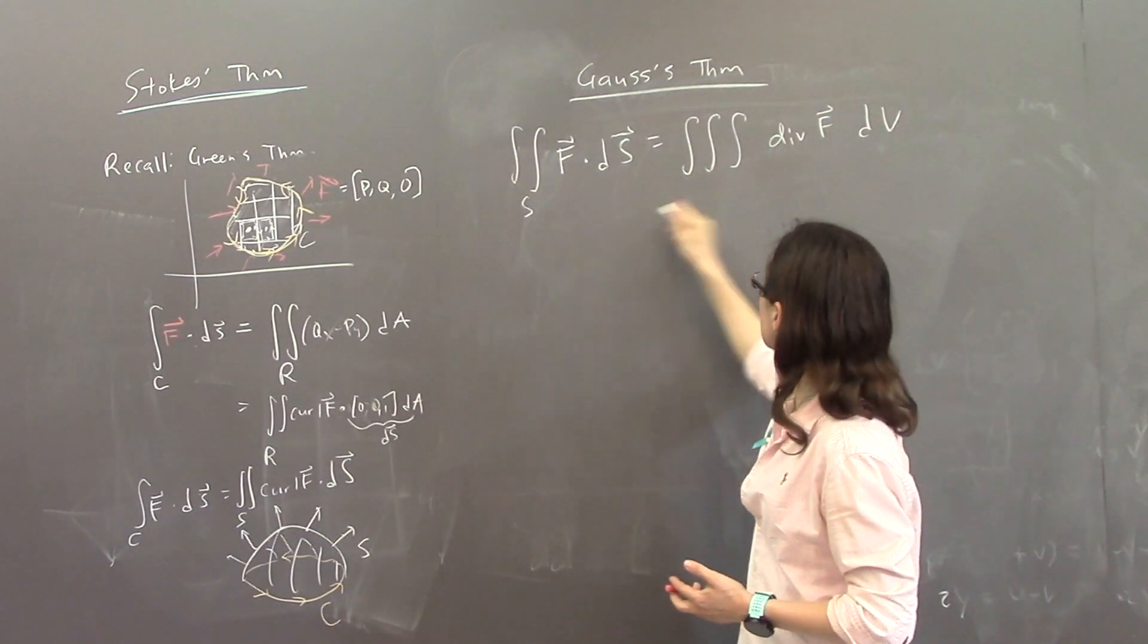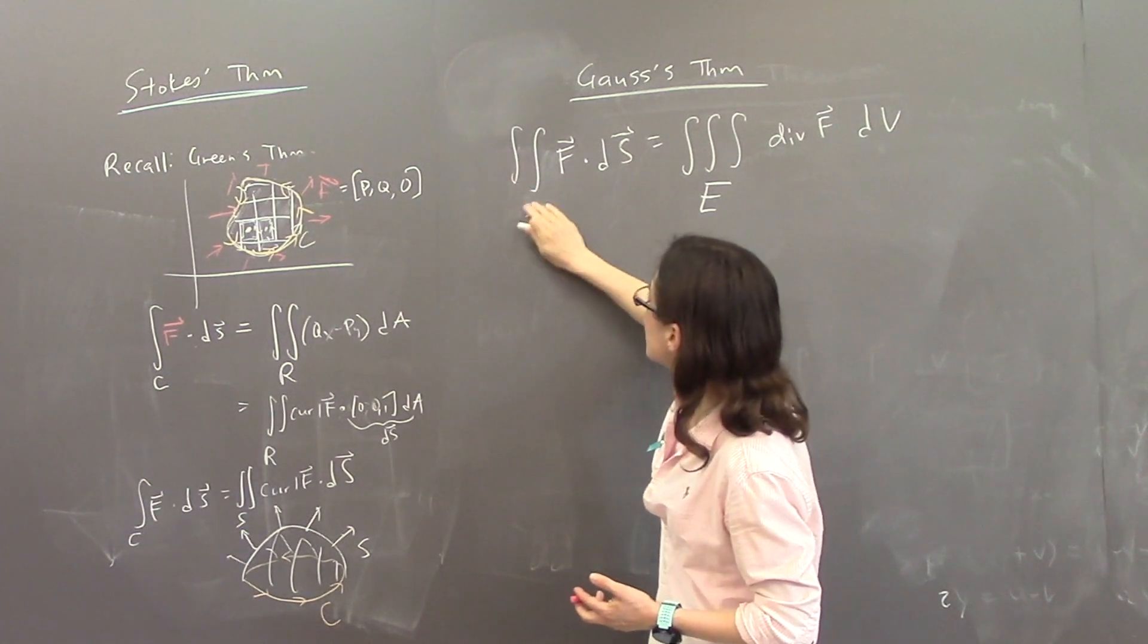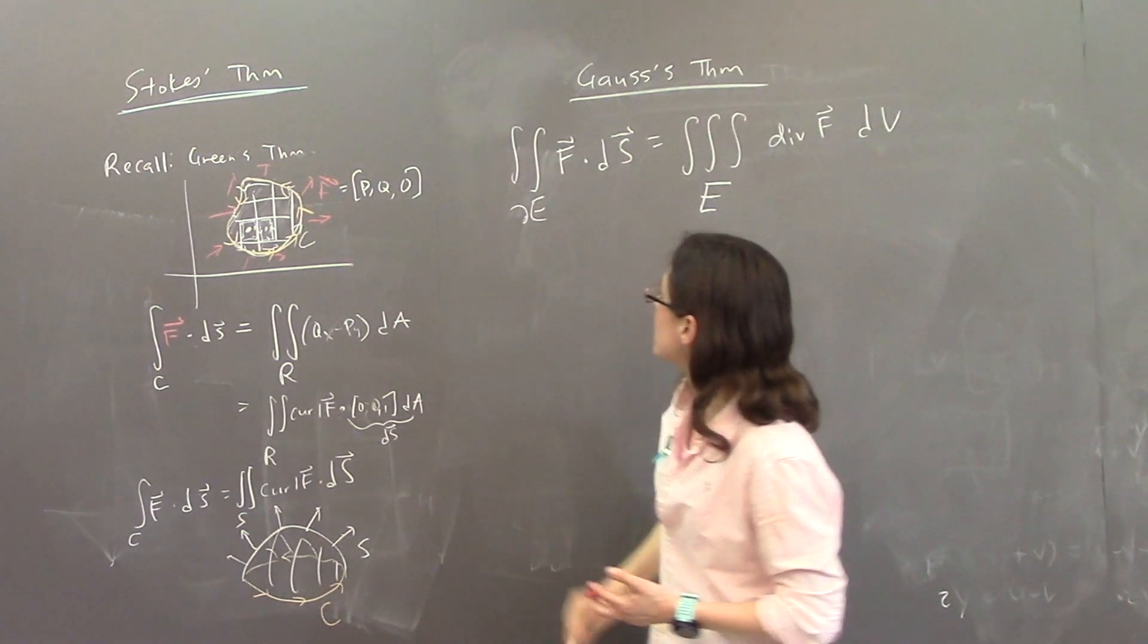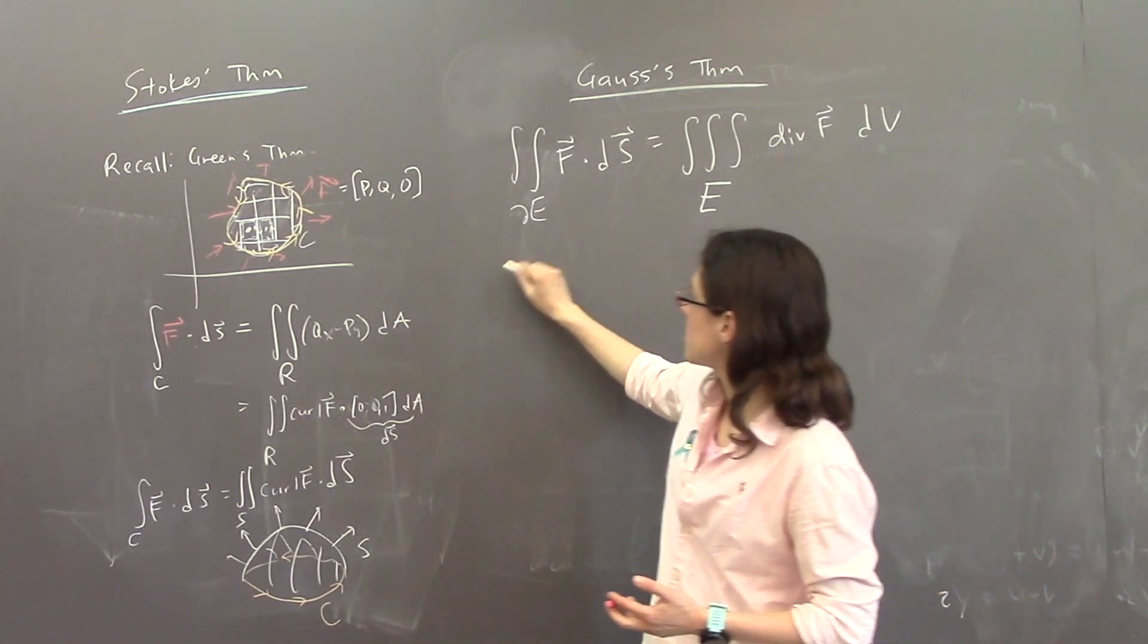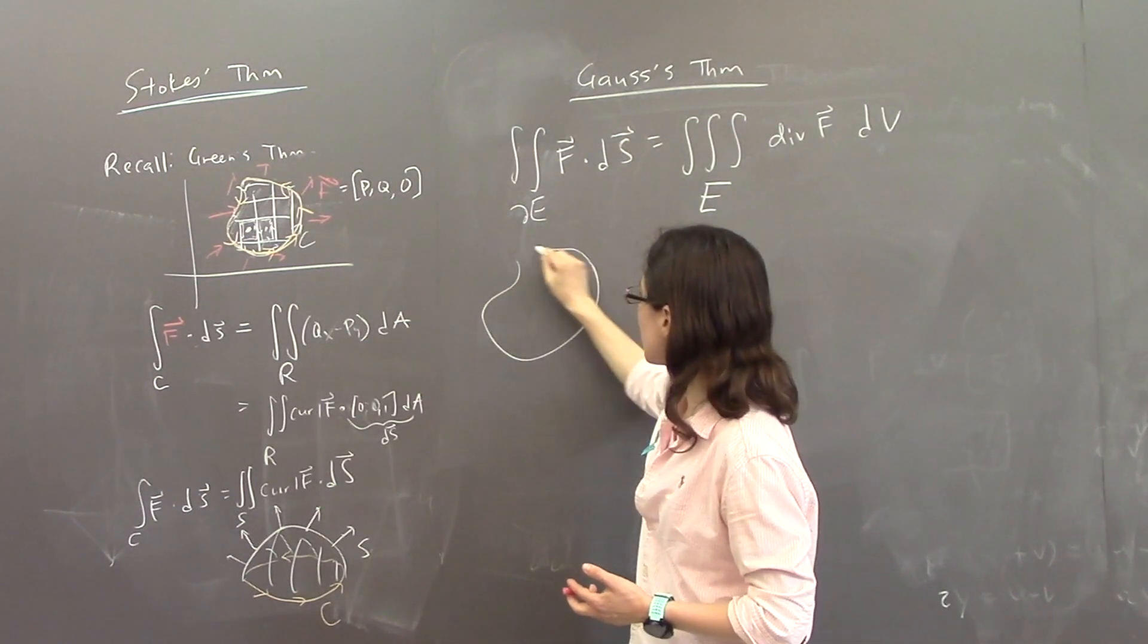And now, instead of calling this a surface, actually, I'm going to say this is a solid chunk of stuff E, and this surface is the boundary of E. So you can imagine that you have some solid thing, like a rock, maybe.